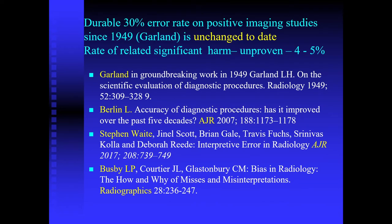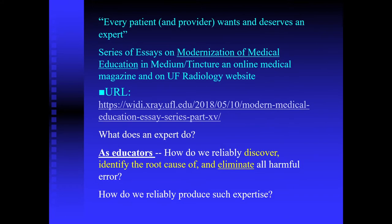What's the scope of the problem? Since 1949, there is a persistent, durable, and never-changing 30% error rate on positive imaging studies. There is a significant amount of harm associated with those errors, estimated at 4% to 5%, which is unacceptably high — and it's probably higher than that. This has been documented over the years in these references.